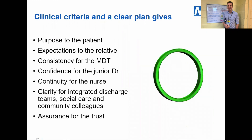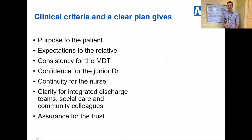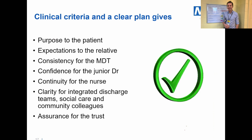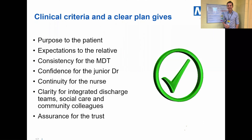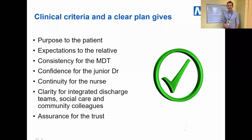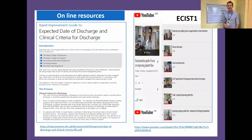Before talking about criteria-led discharge, always start with ensuring patients have really clear plans. Clear plans give purpose to the patient, set expectations for relatives, provide consistency for the multidisciplinary team, confidence for junior doctors, continuity for nursing teams, and clarity for complex discharge teams such as integrated discharge teams, social care teams, and community colleagues. If they can't find a clear plan, it makes their job incredibly difficult. And also assurance for the trust. If you Google 'expected date of discharge and clinical criteria for discharge,' you can find our rapid improvement guide. We also have a YouTube channel — Google ECIST.